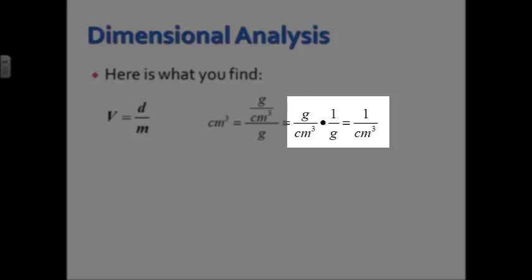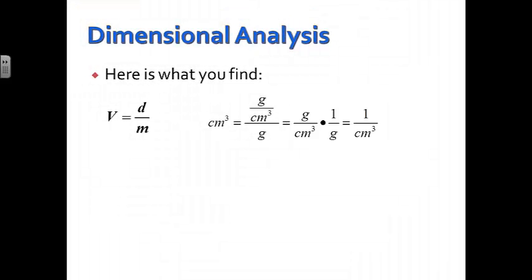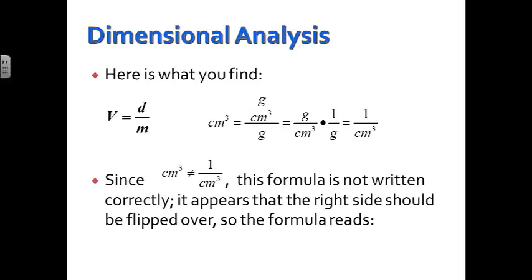When we simplify this, we can see we have grams on the top, grams on the bottom. Those would cancel, and that would leave us with units of 1 over cubic centimeters. Now wait a second. Does that look right? Cubic centimeters is not equal to 1 over cubic centimeters. So this formula is not written correctly.